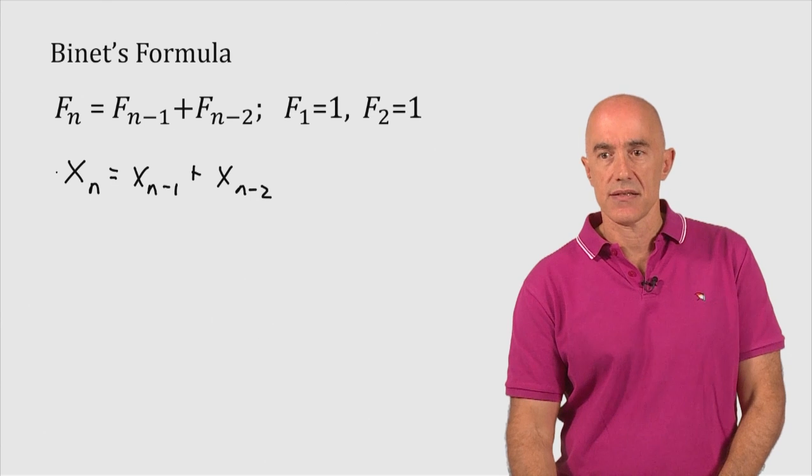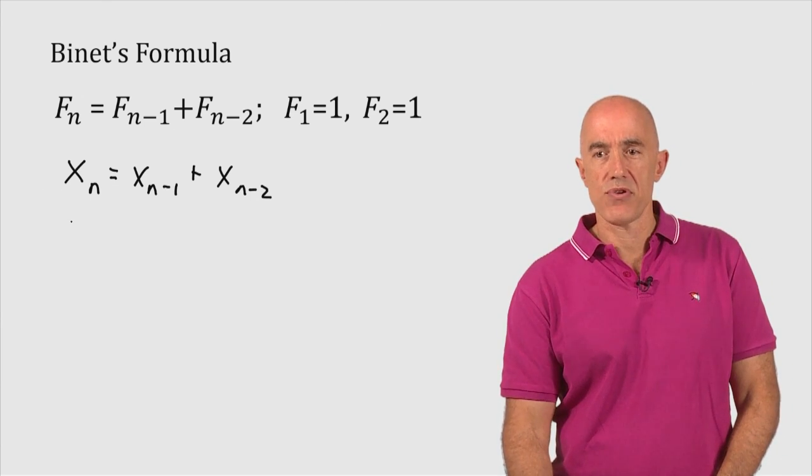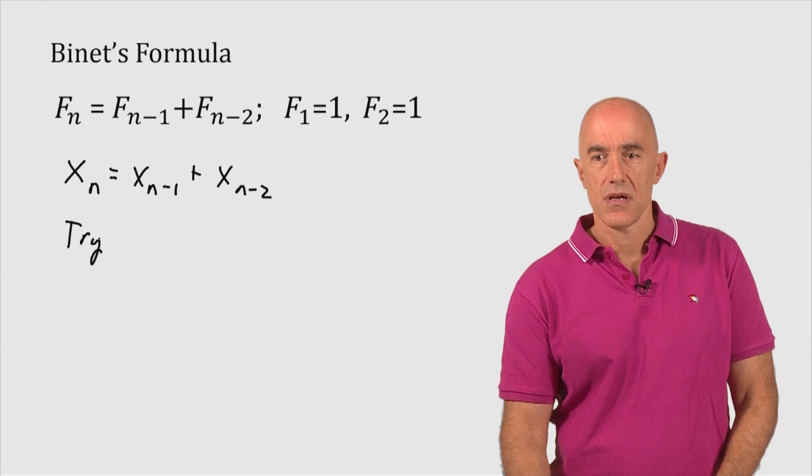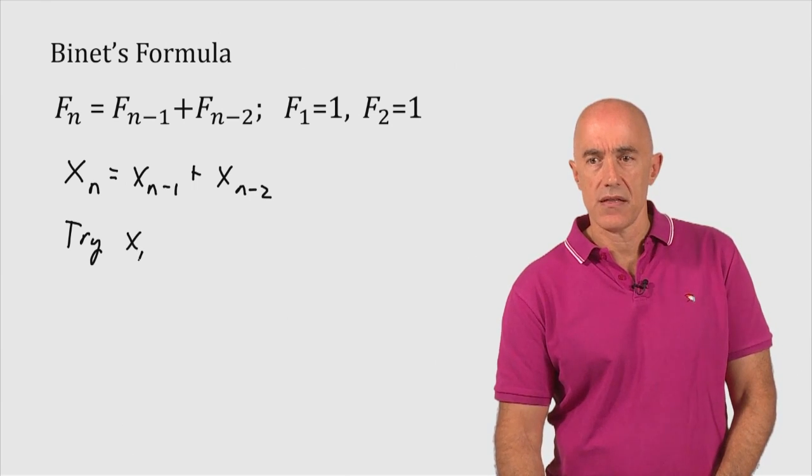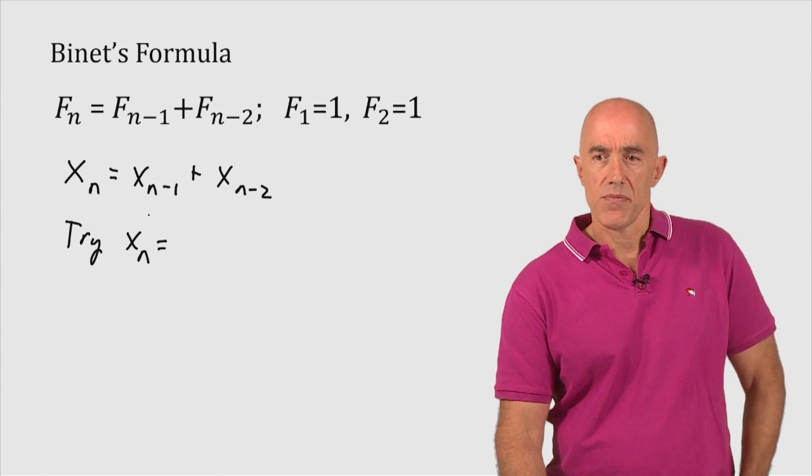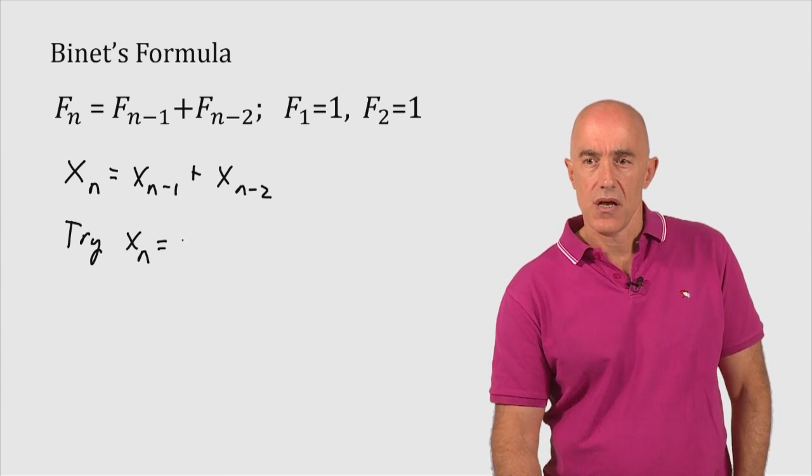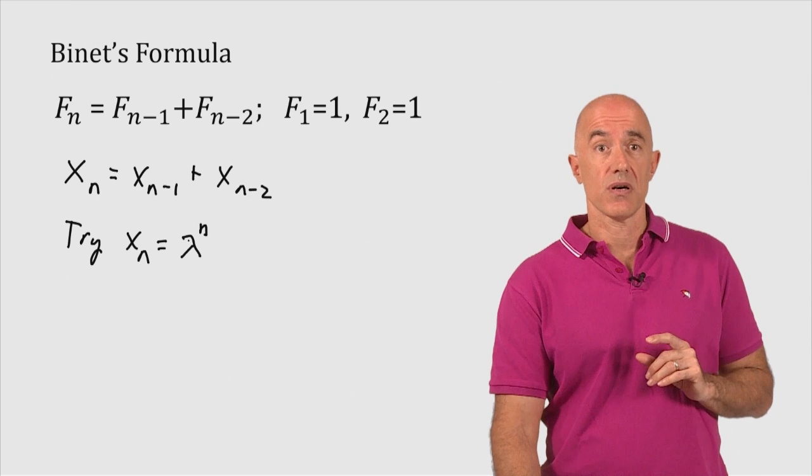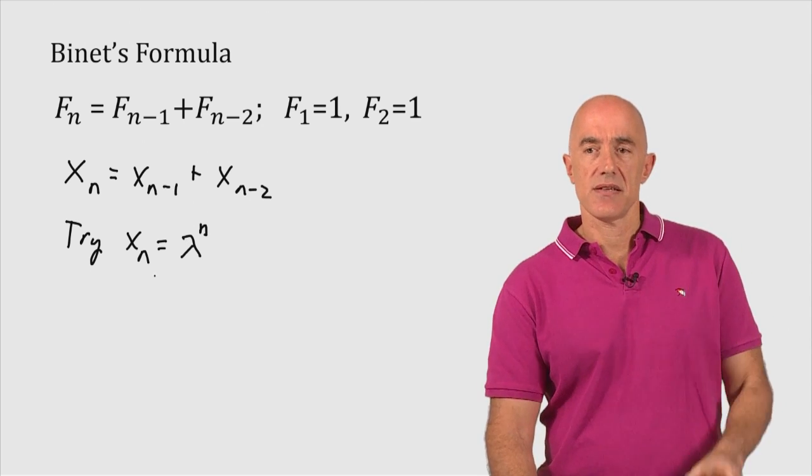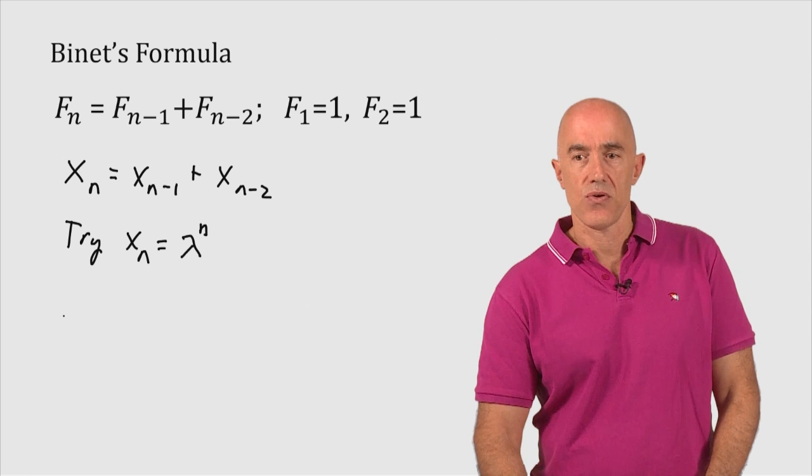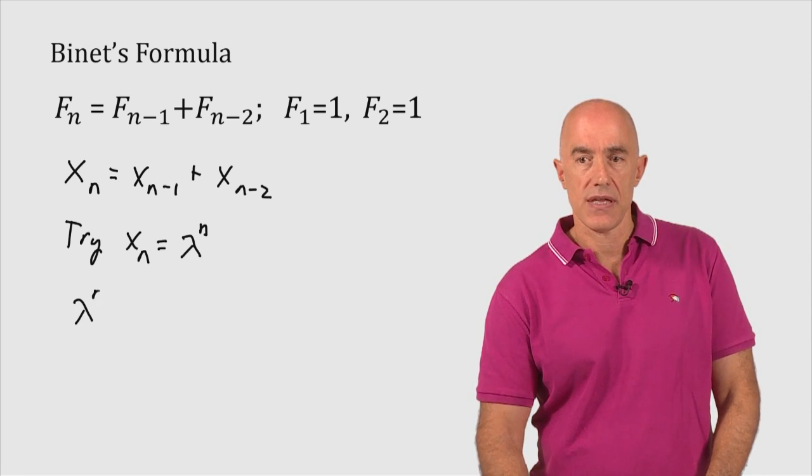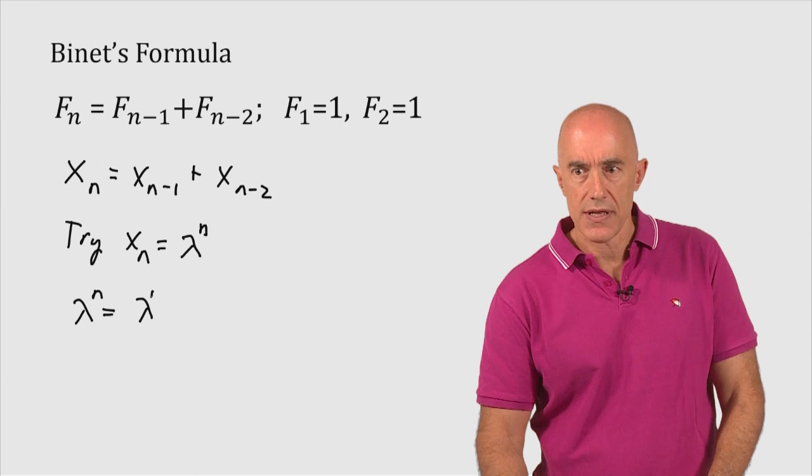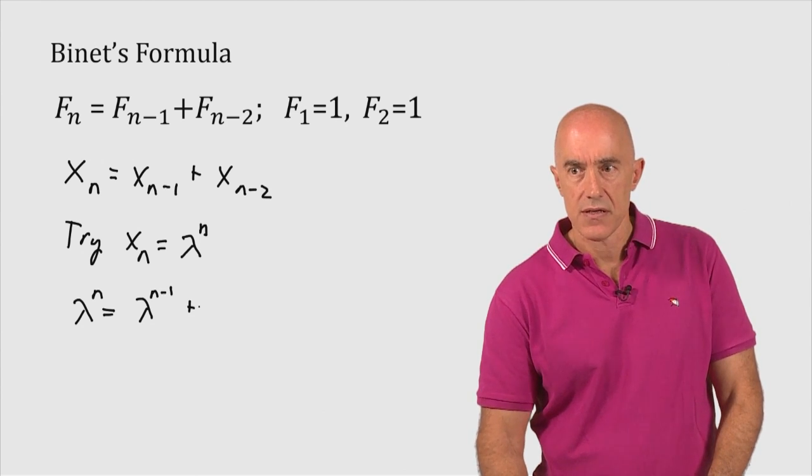We need to make our guess. So what is the appropriate guess for the solution of this equation? Because of the nature of this equation, you can try several things, but it turns out that the appropriate guess is a constant raised to the nth power, so a power law. We can see that that's the appropriate guess because if we substitute it into the equation, we end up with lambda to the nth equals lambda to the n minus 1 power, plus lambda to the n minus 2 power.